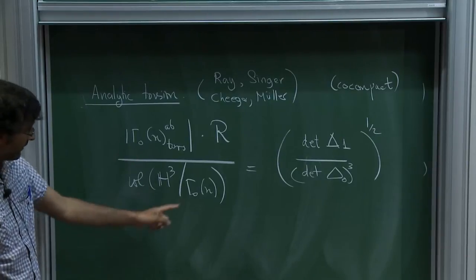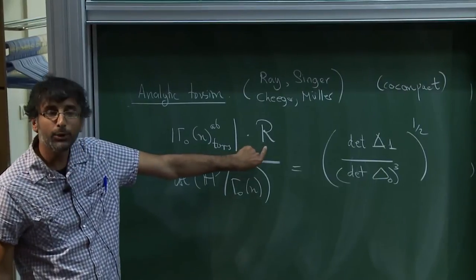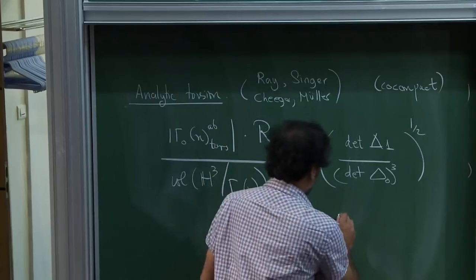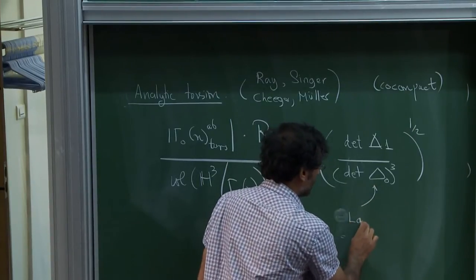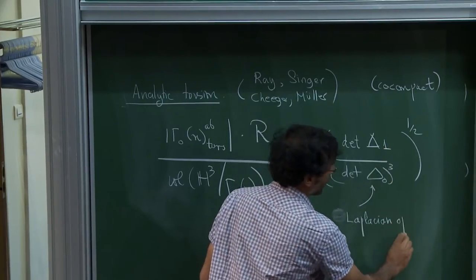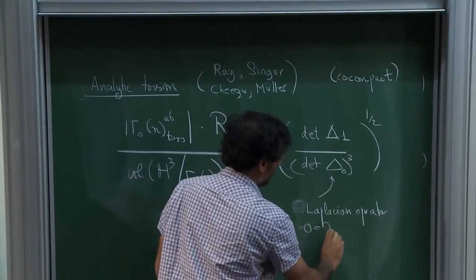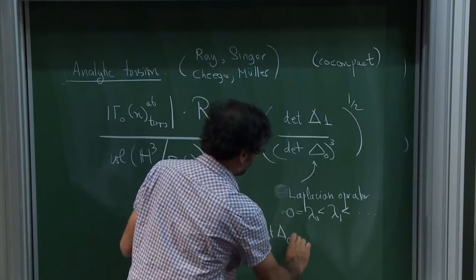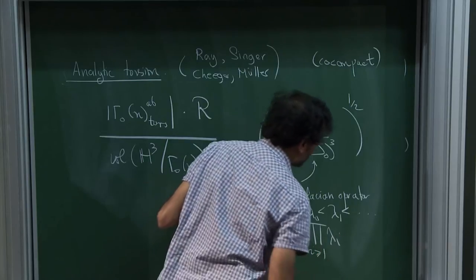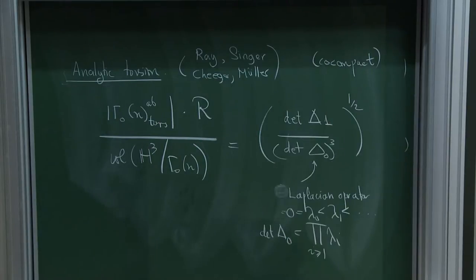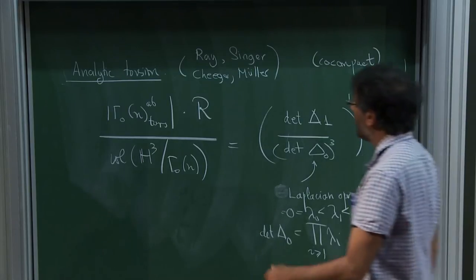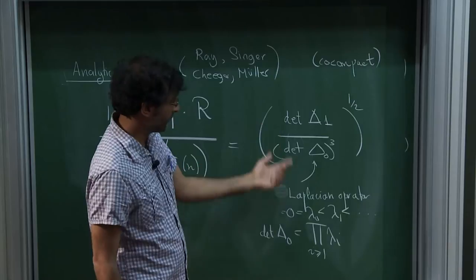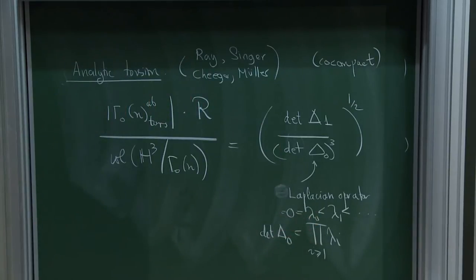I want to tell you what these terms are and then spend some time saying what we can prove towards this. For example, Δ₀ is just the usual Laplacian operator on functions; Δ₁ is on forms or in different weight. It has some eigenvalues. In the co-compact case it has no continuous spectrum, and this determinant is some way of making sense of the product of the eigenvalues. I actually prefer thinking about it this way rather than via Selberg's zeta function, because it's clearer what the effect of the eigenvalue spectrum is.